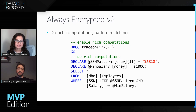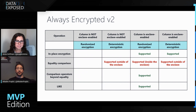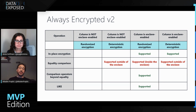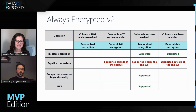For a summary of what is actually supported: if your column is enclave-enabled with randomized encryption, you can do in-place encryption, equality comparison, LIKE, and pattern matching — everything is supported. If it's not enclave-enabled, the only thing you can do is equality comparison with deterministic encryption, because you cannot compare something with randomized encryption. That's pretty much it. This has been a quick overview of Always Encrypted — the point was to demystify it and make you think about whether you can implement it in your environment.